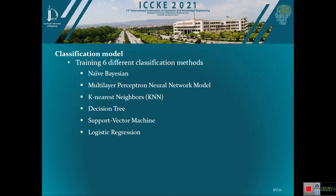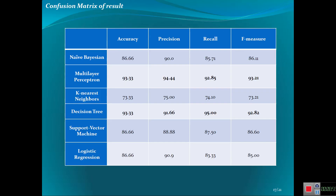Finally, six different classification methods were trained: Naive Bayes, Multi-Layer Perceptron neural network, K-Nearest Neighbor, Decision Tree, Support Vector Machine, and Logistic Regression. The final results are shown here. As you can see, two algorithms — namely Multi-Layer Perceptron and Decision Tree — reached the highest results among the others.